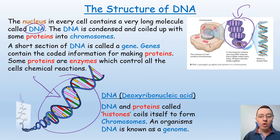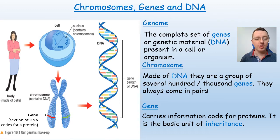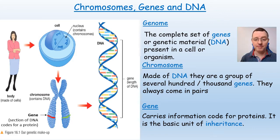All of an organism's DNA is known as its genome. The genome is the complete set of genes or genetic material — DNA — present in a cell or an organism, and that will be the same in every single nucleus of every single cell an organism has, because they will all contain identical copies of the DNA.